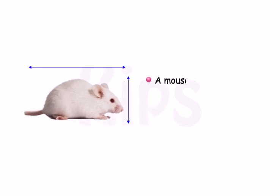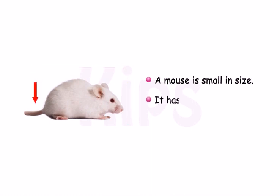A mouse is small in size. It has a tail. It runs very fast.